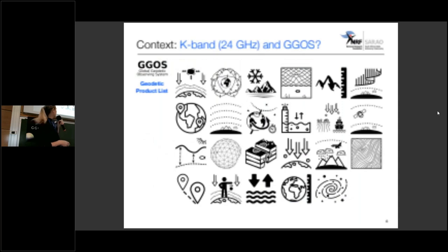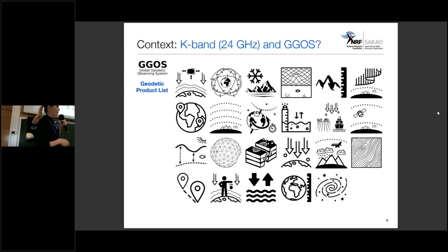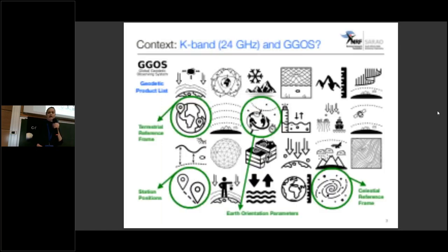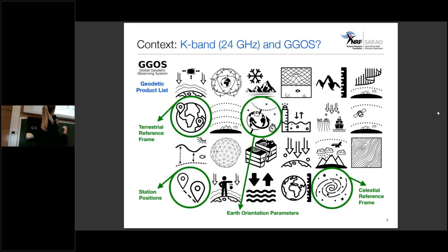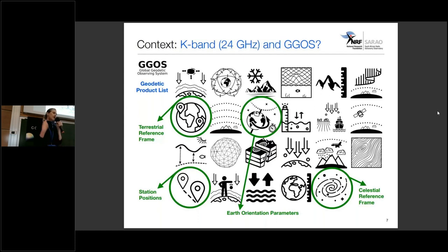Back to the GGOS webpage, looking at the product list — specifically the main products we get from VLBI: there are the Earth orientation parameters, station positions, it contributes to the terrestrial reference frame, and then there's also the celestial reference frame.